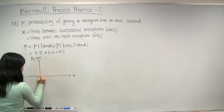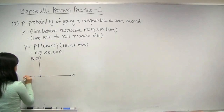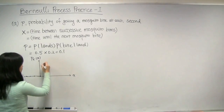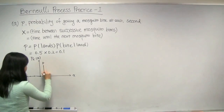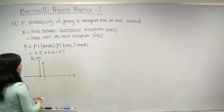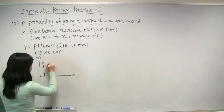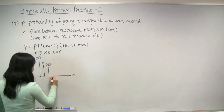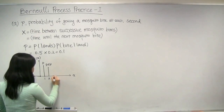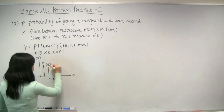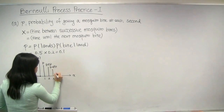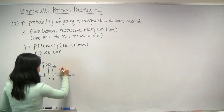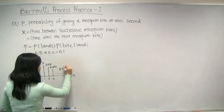For all x less than or equal to 0, the probabilities are equal to 0. For x equal to 1, the probability that it takes one second until the next mosquito bite is simply equal to p. For x equal to 2, the probability that it takes 2 seconds until the next mosquito bite is equal to (1 minus p) times p. For x equal to 3, the probability that it takes 3 seconds is equal to (1 minus p) squared times p. Similarly, for x equal to k, the probability that it takes k seconds until the next mosquito bite is equal to (1 minus p)^(k-1) times p.